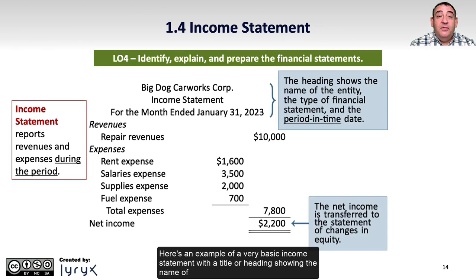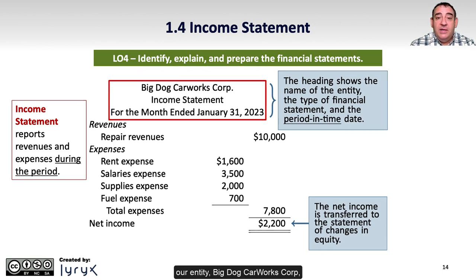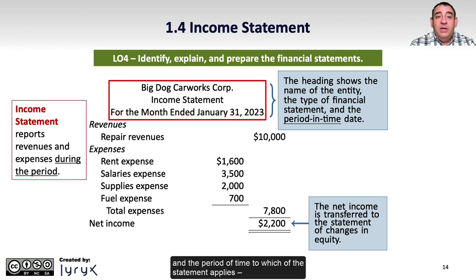Here is an example of a very basic income statement with a title or heading showing the name of our entity, Big Dog Car Works Corp., and the period of time to which the statement applies — in this case, for the month ended January 31, 2023.